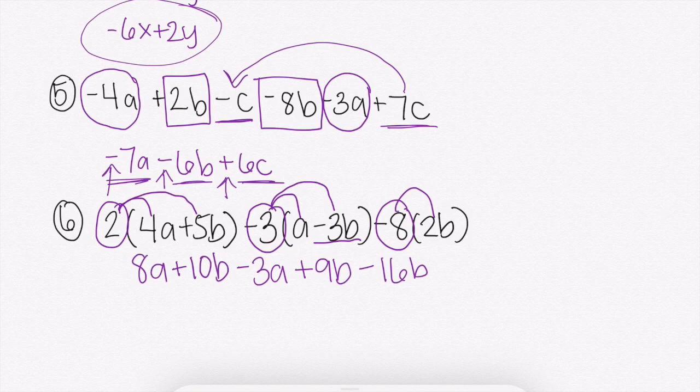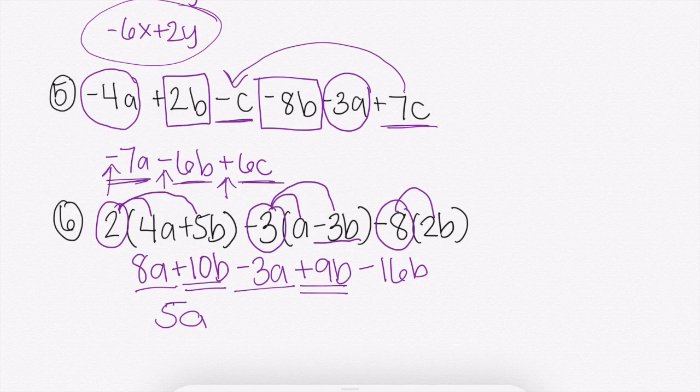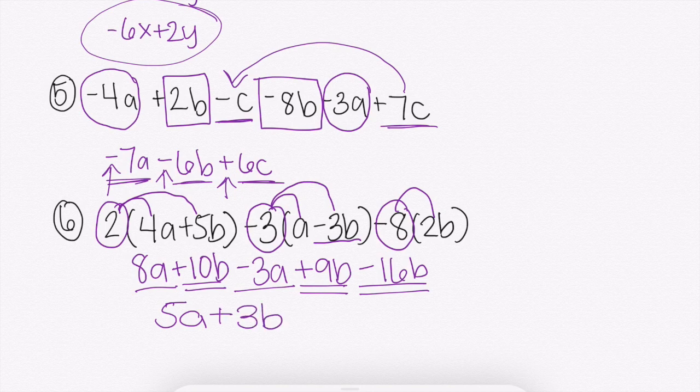Once you have distributed everything you can distribute, then just like the problem before, you're going to combine your like terms. It actually looks really similar to number 5. I have 8a and negative 3a. 8a minus 3a would get me 5a. And then I'm going to go through with my b's. A positive 10b plus 9b would get me 19b minus 16b would get me a positive 3b. And that would be my simplified form. I can't combine a's and b's, so that's as simplified as it can get.